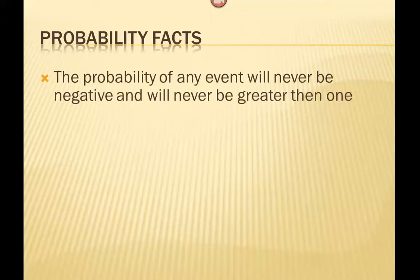The first big one is that the probability of any event will never be negative and will never be greater than 1. This can be really important as you're working through problems because sometimes mistakes are made. If you ever end up with a decimal that's negative or greater than 1, then you know something went wrong. Your probability will always be between 0 and 1, and if you're talking about percentage, it'll always be between 0 and 100%.